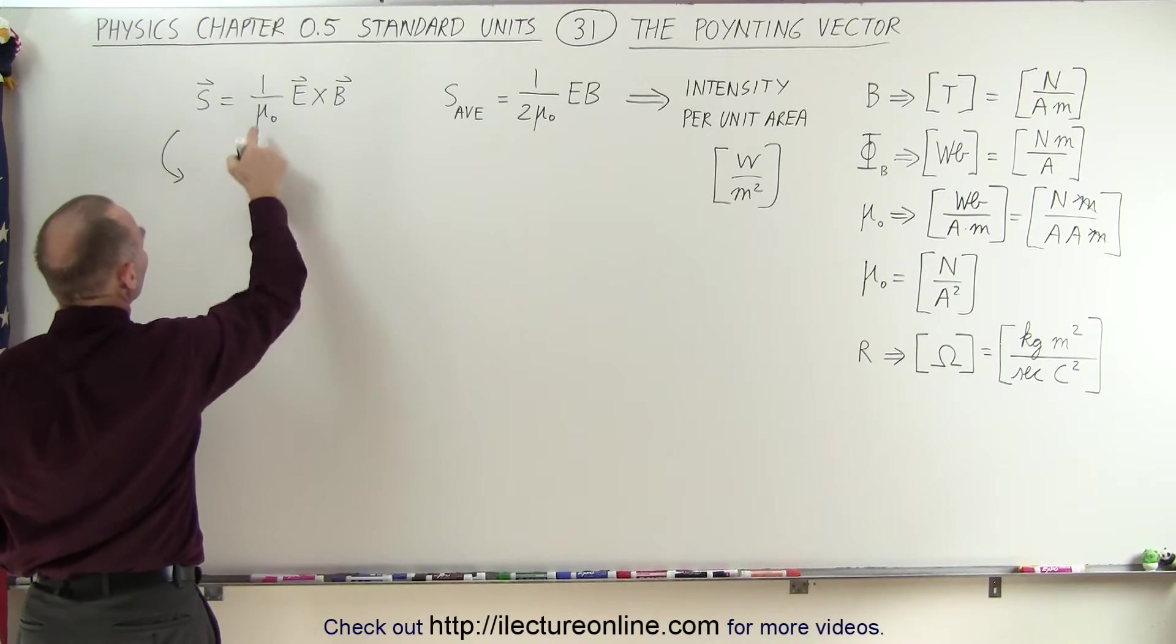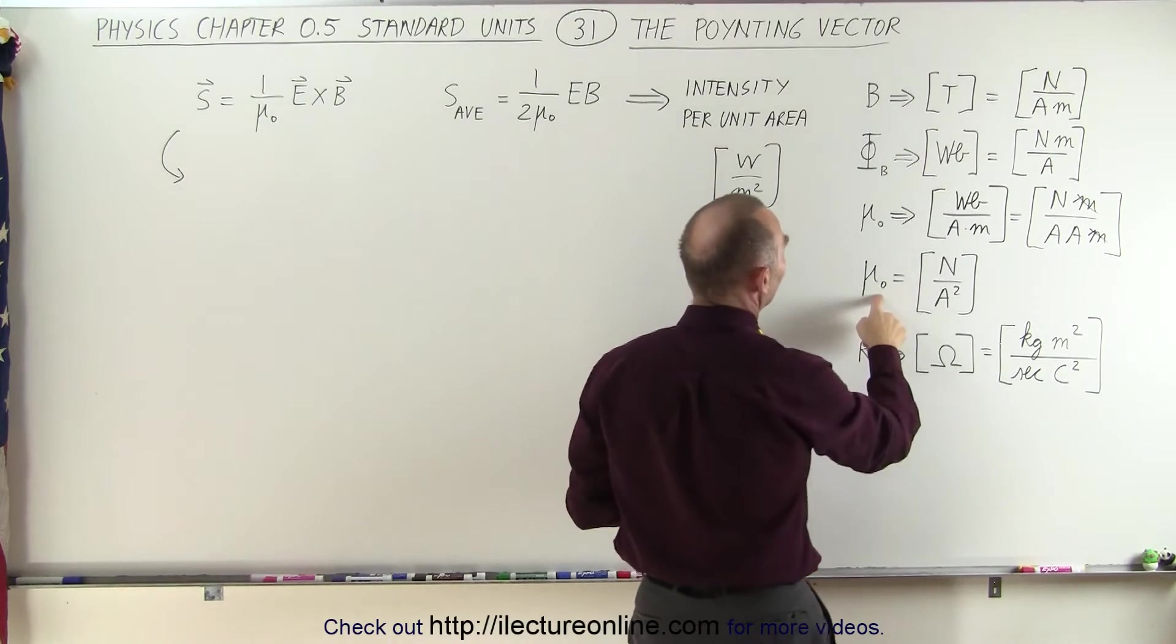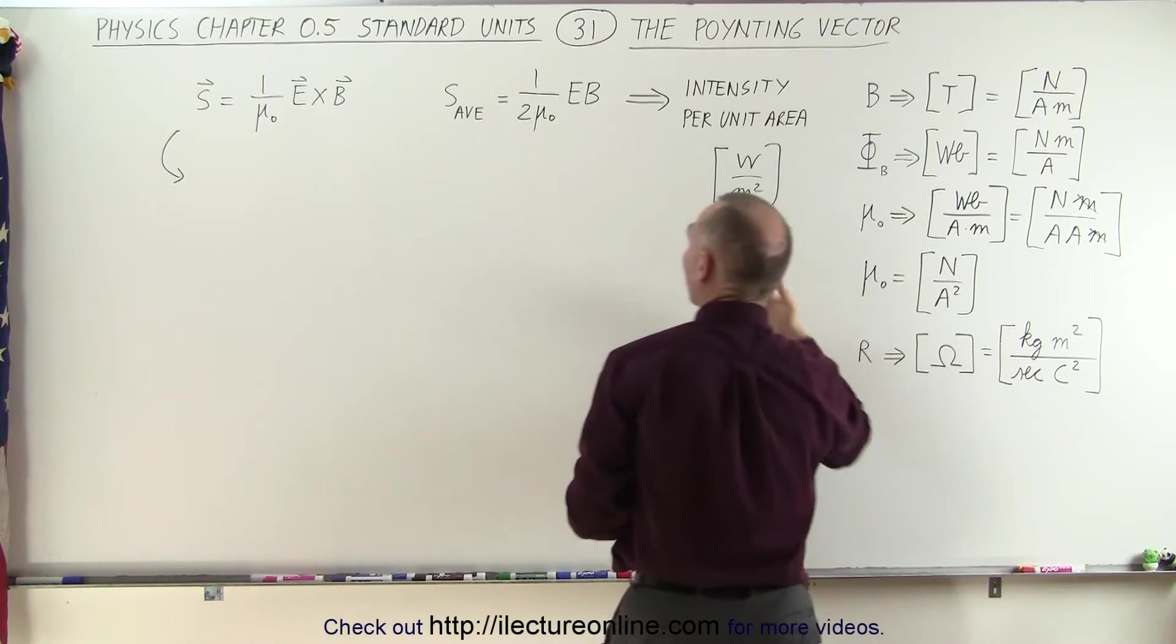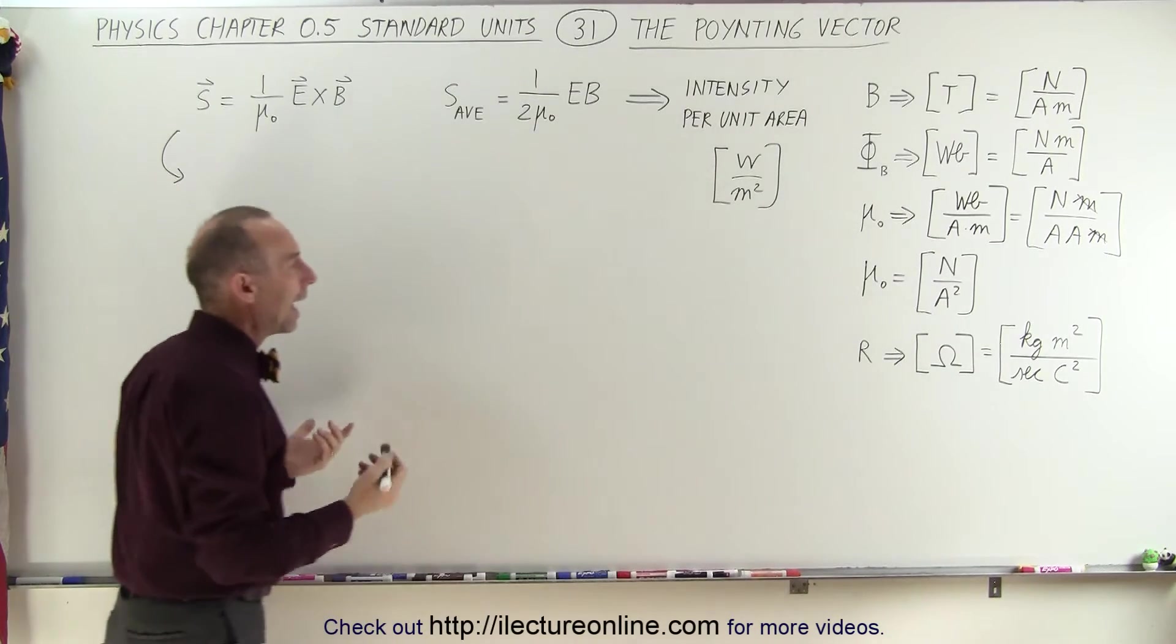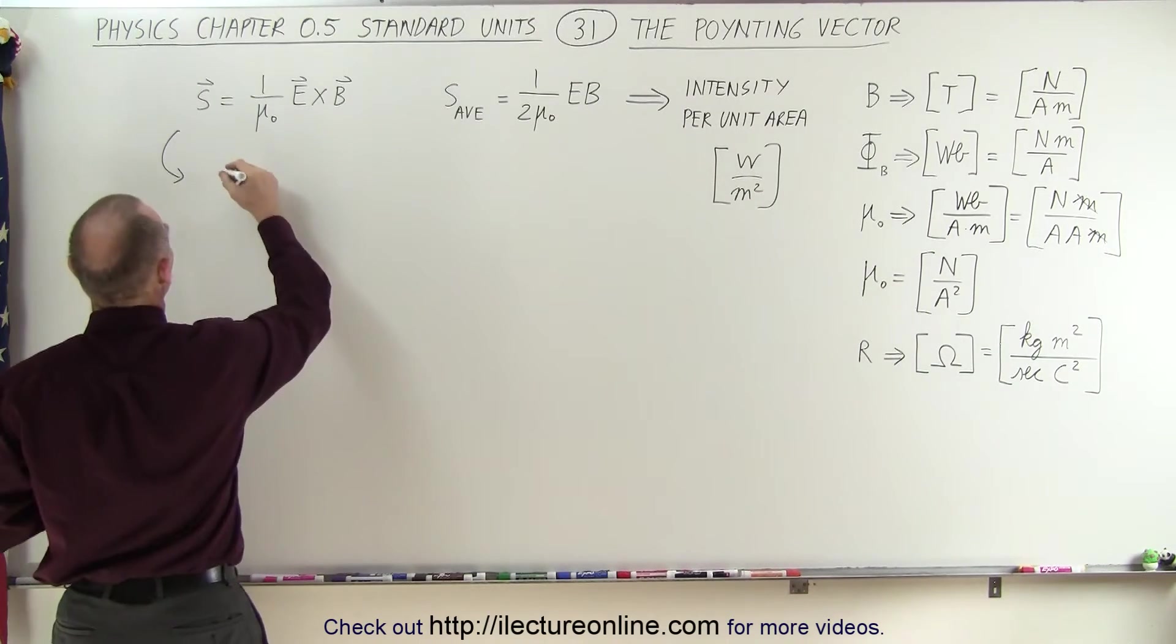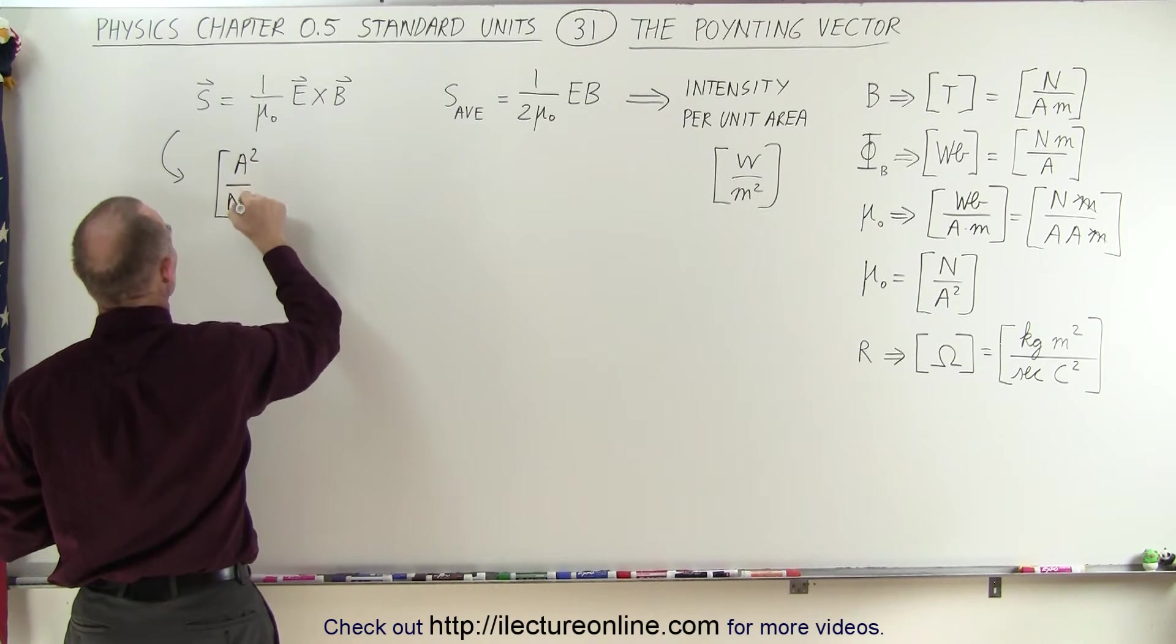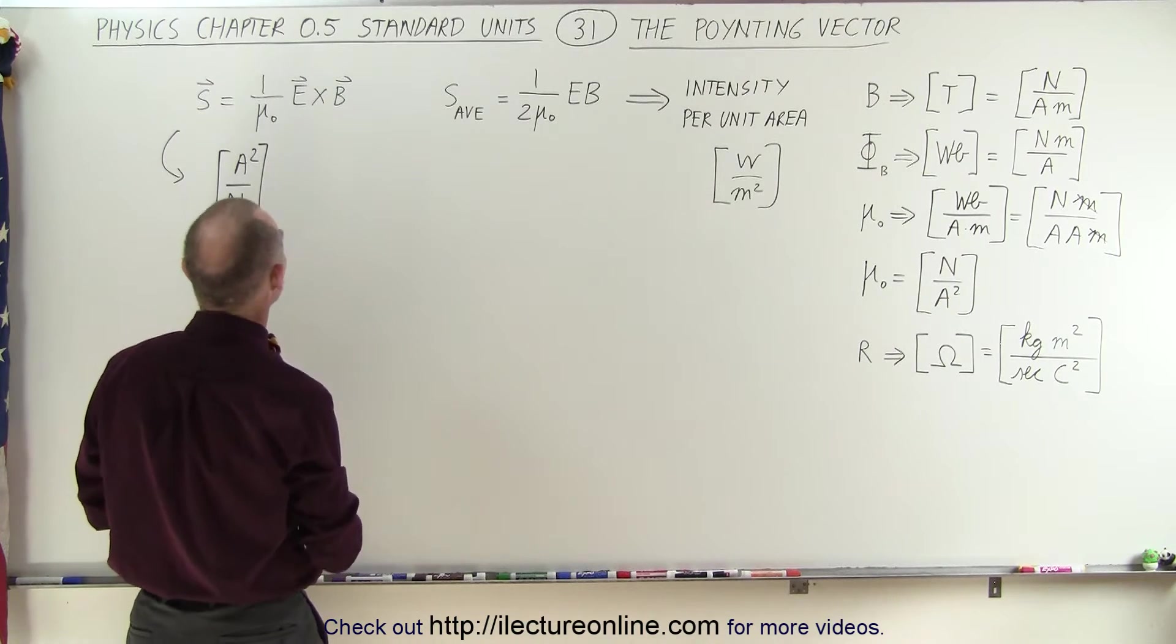If we want to calculate the units, first of all, we have 1 over mu sub nought, the permeability of free space, and that has units of newtons per amp squared. But since it's in the denominator, we'll simply flip that around and write it as amp squared per newtons for the inverse of the permeability of free space.